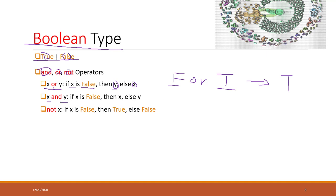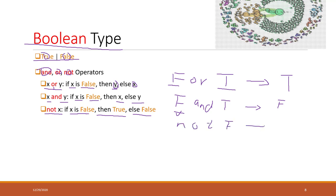For the 'and' operator with x and y: if x is False, it returns x; otherwise it returns y. For example, 'False and True' returns False because x is False, so it retains x. For the 'not' operator: if x is False, it returns True; otherwise it returns False. So 'not False' returns True, and 'not True' returns False.